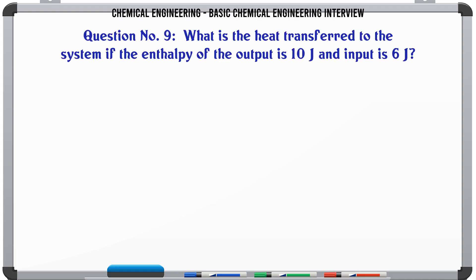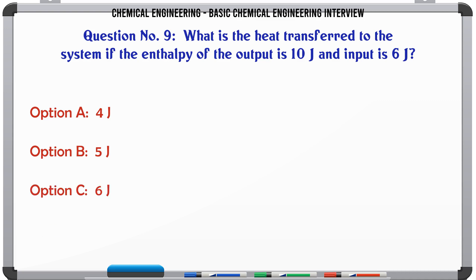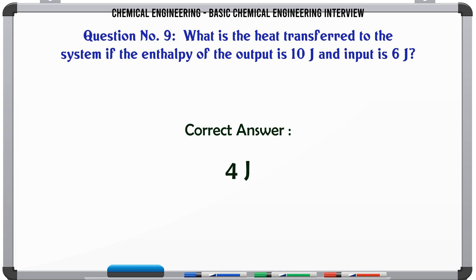What is the heat transferred to the system if the enthalpy of the output is 10 J and input is 6 J? A) 4 J. B) 5 J. C) 6 J. D) 8 J. The correct answer is 4 J.